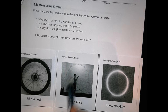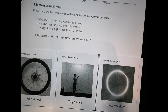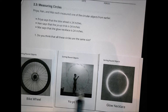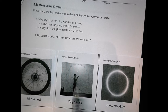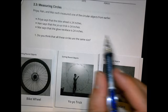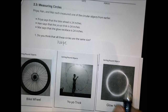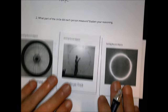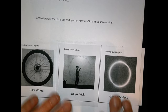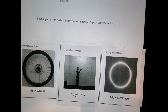Well, in terms of reality — 24 inches for a bike wheel seems reasonable across. But the yo-yo trick seems as tall as the girl, maybe five feet, so I'm not sure where that 24 came from. And a necklace is much smaller than a bike wheel. So the 24 inches must be saying something different about each of these pictures. They're not all the same size.